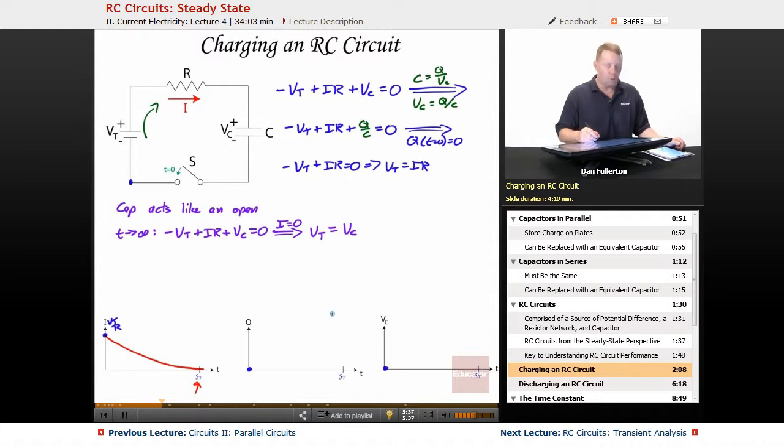Now the capacitor must be charging up during this time. When it's fully charged, we know that it must have a charge of CVT on it. So I'm going to draw an asymptote in here at CVT when it's fully charged, and it's going to have an exponential increase toward that value, getting really close to it at about five tau or five time constants.